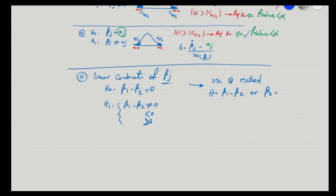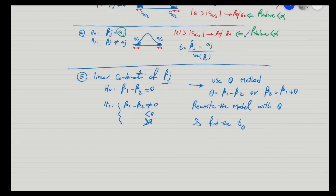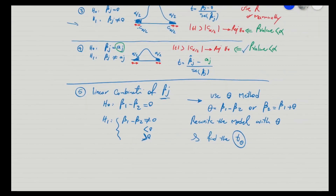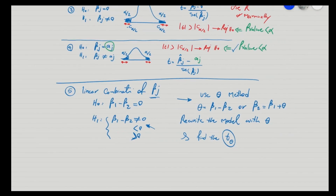Using the theta method, we rewrite the model where theta is defined as β1 minus β2. You can solve for β2: β2 = β1 + θ. We then rewrite the model with theta and find the t-statistic for theta. The rest is exactly the same — it depends on whether it's a one-tail or two-tail test. Instead of working with two coefficients, β̂1 and β̂2, we work with just one: theta.